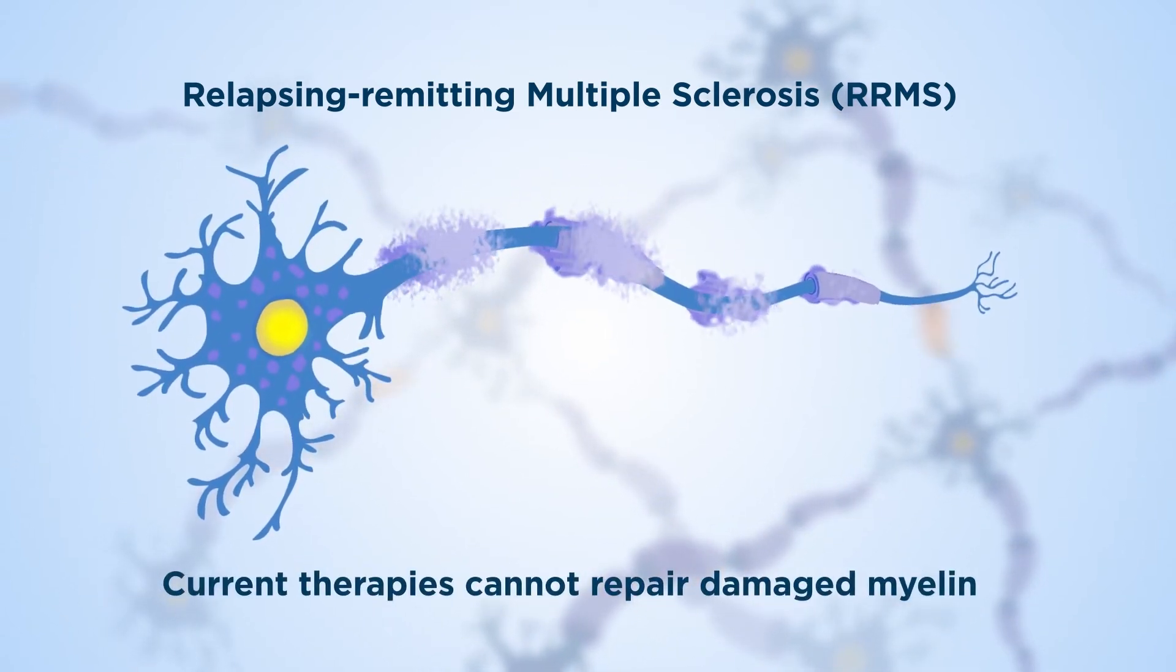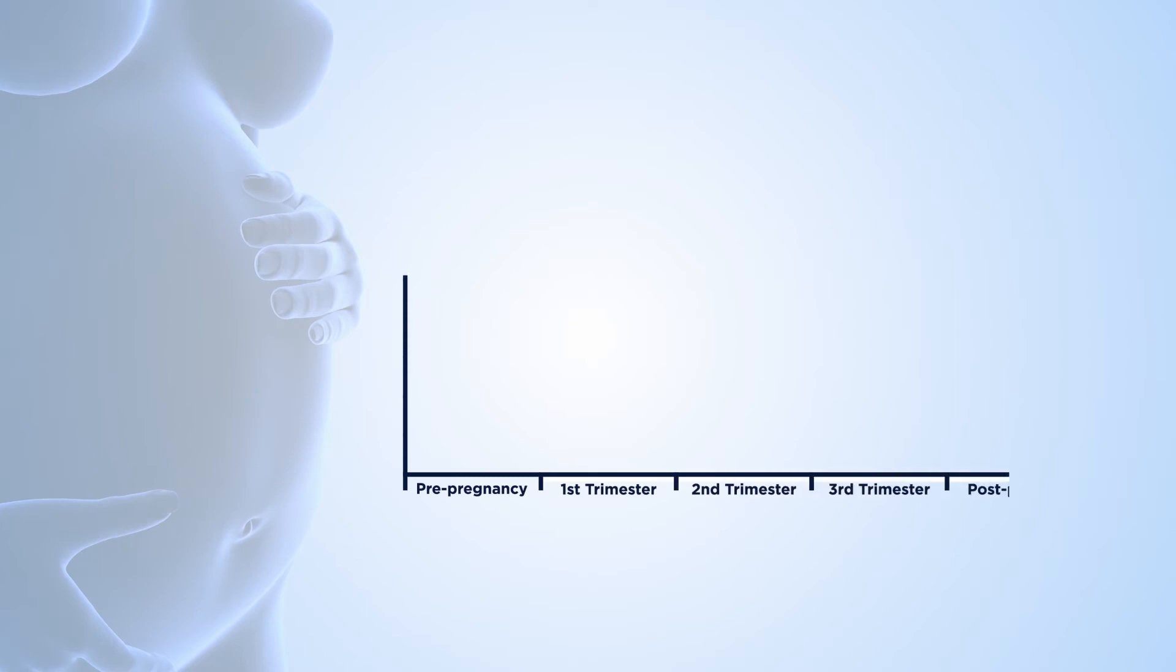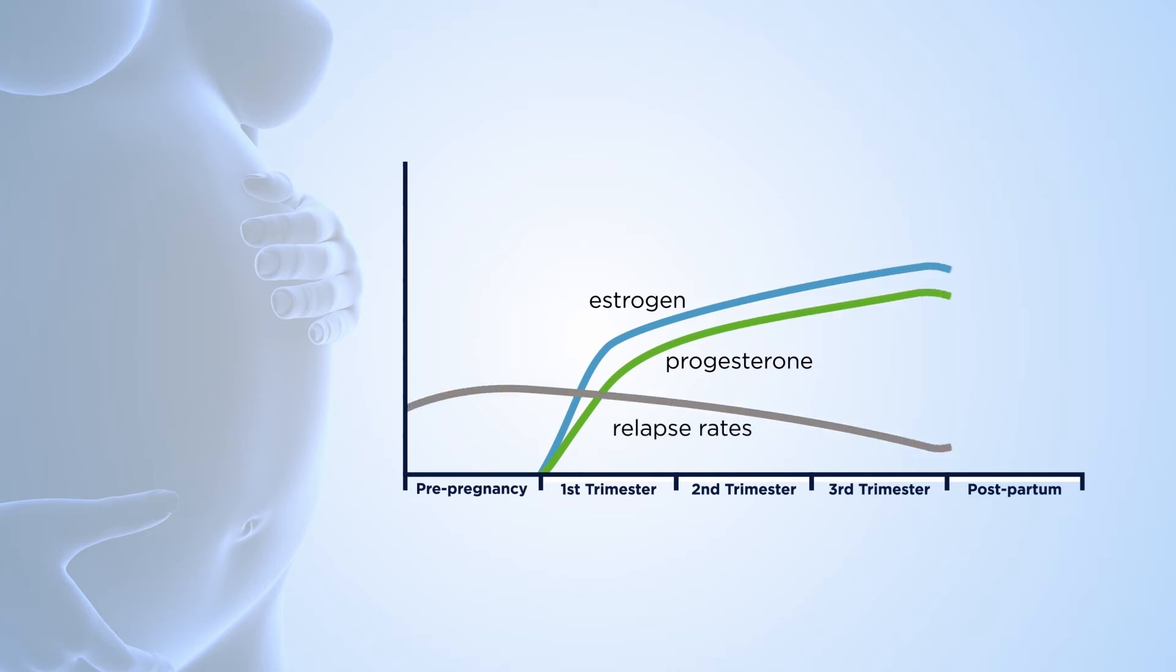However, these therapies cannot repair damaged myelin. Research findings indicate a protective role of female sex hormones in MS. During pregnancy, as estrogen and progesterone levels rise, relapse rates decline, especially in the third trimester.